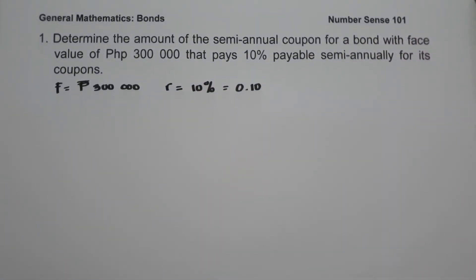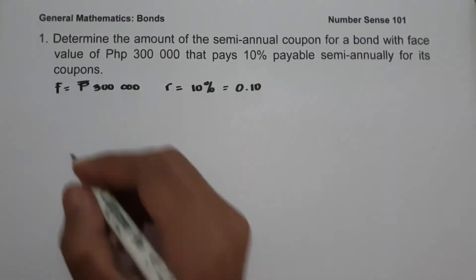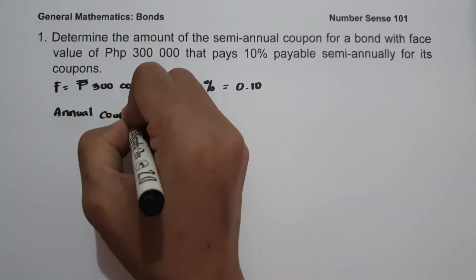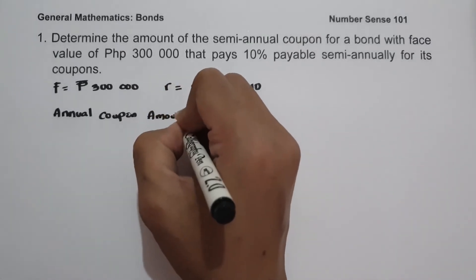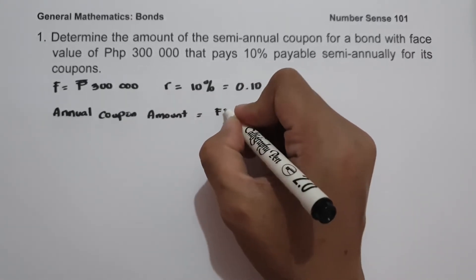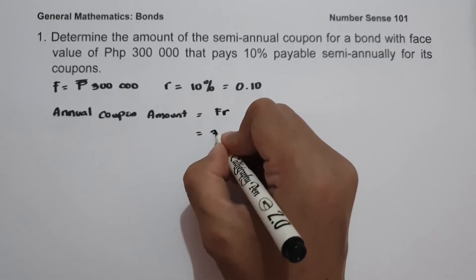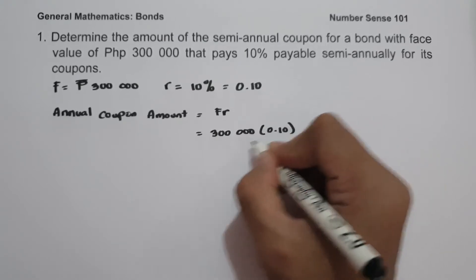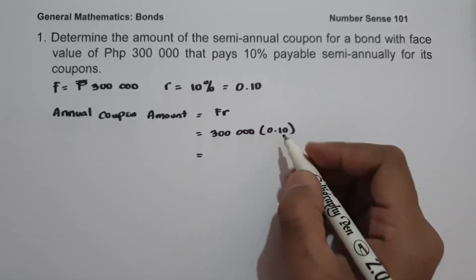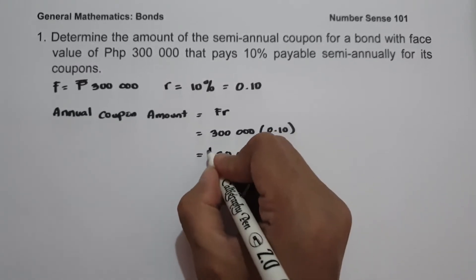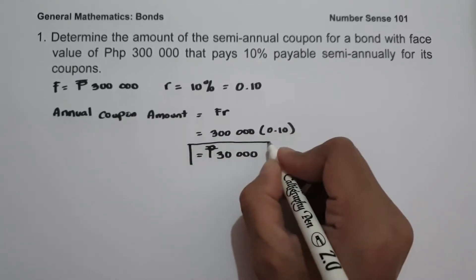To determine the semi-annual coupon amount, the first step is to find the annual coupon amount. To find it, we simply multiply the face value by the coupon rate: 300,000 multiplied by 0.10, which gives us 30,000. So the annual coupon amount is 30,000 pesos.